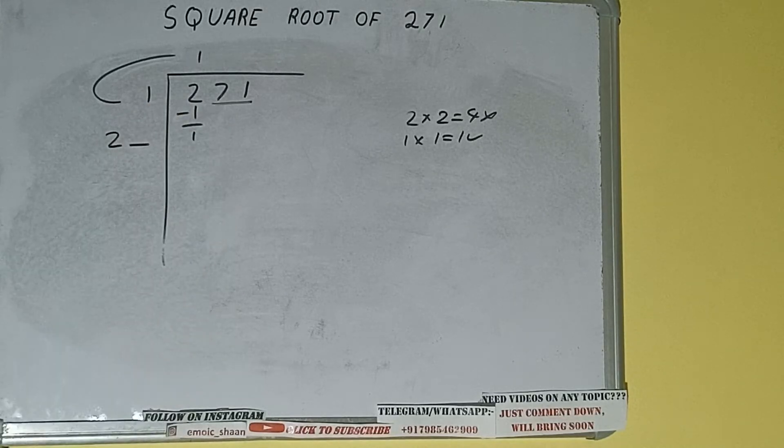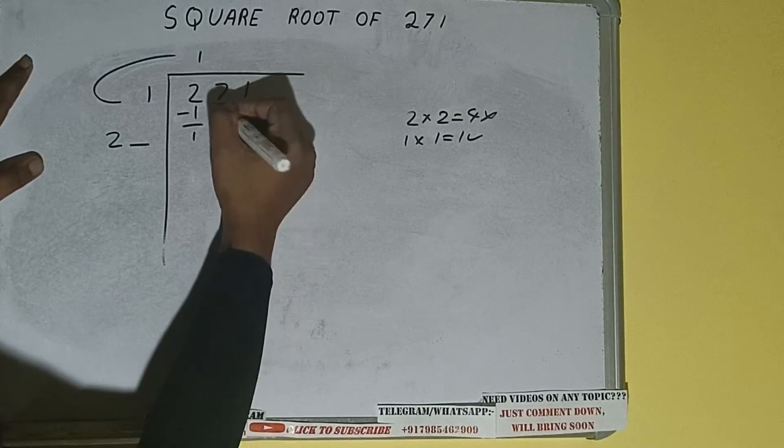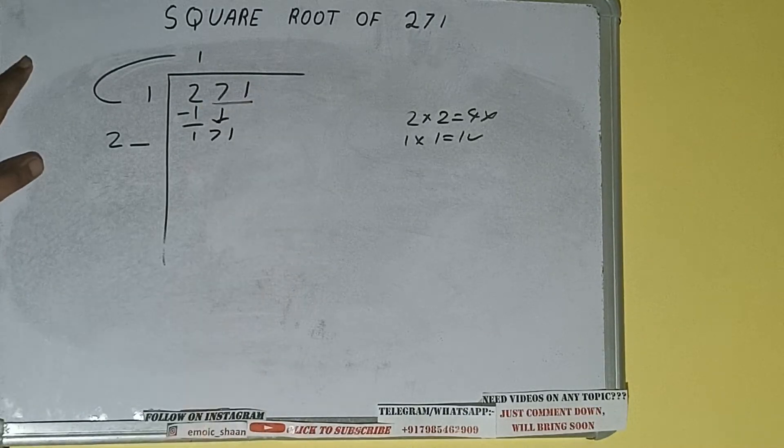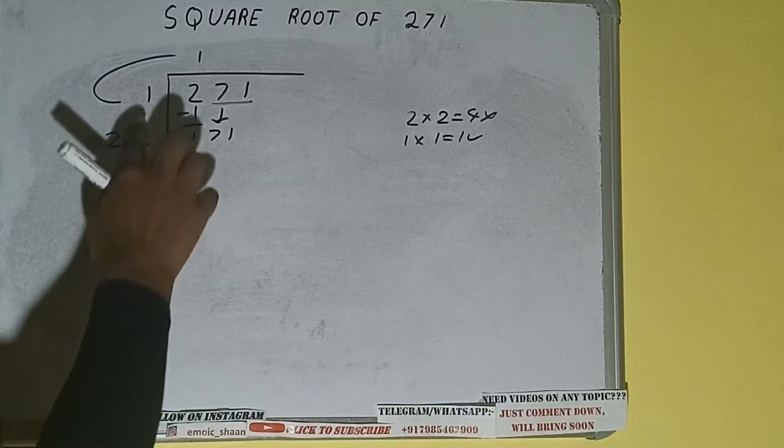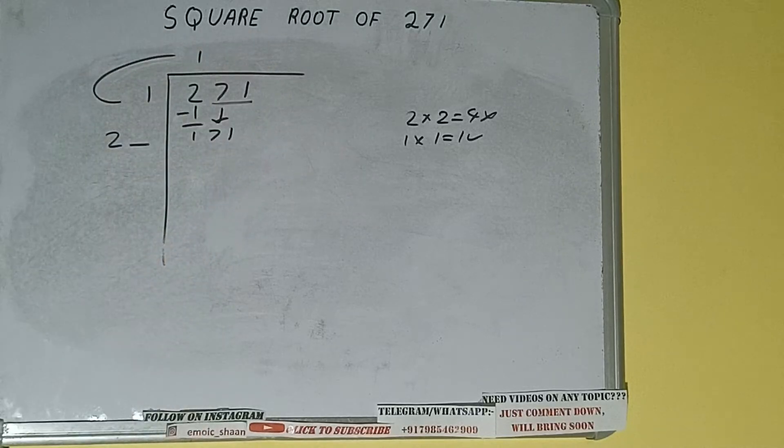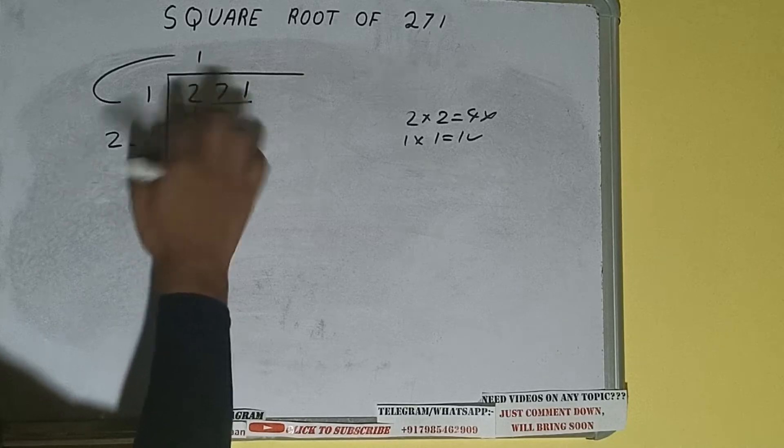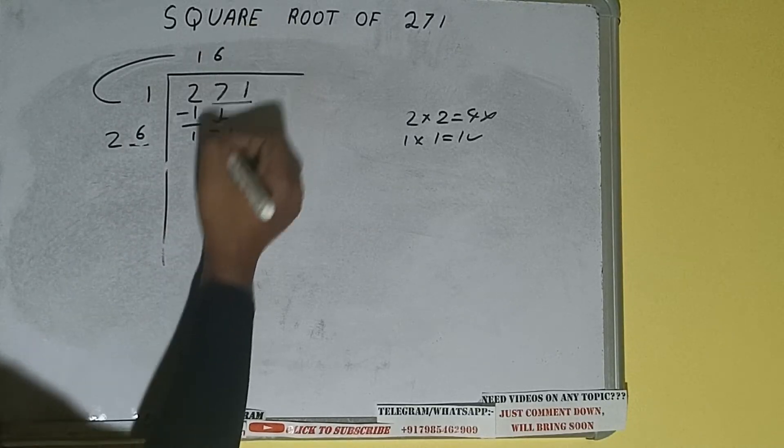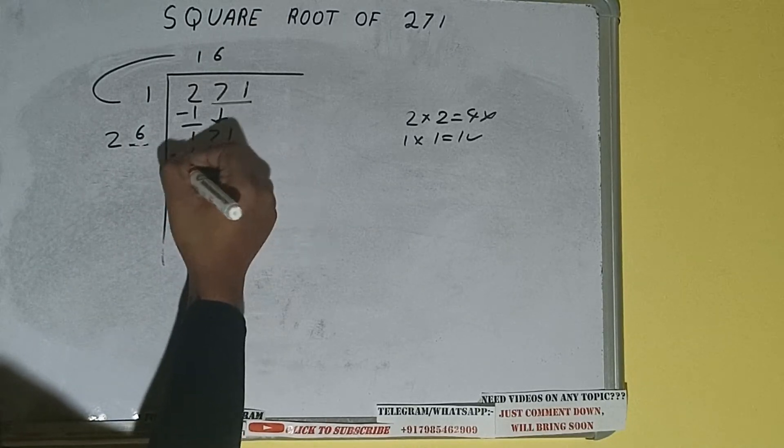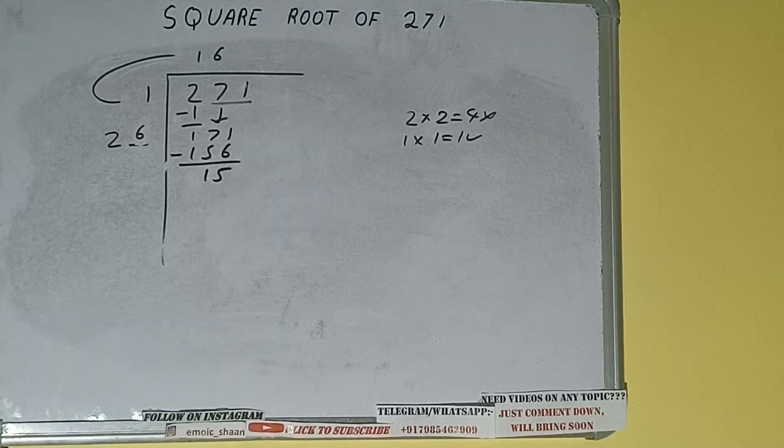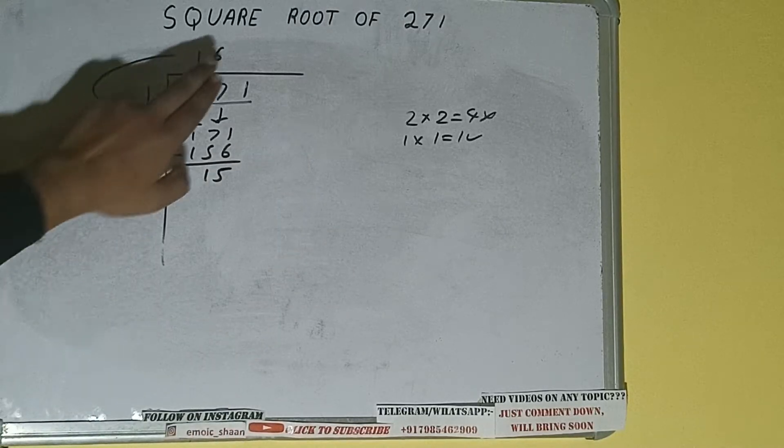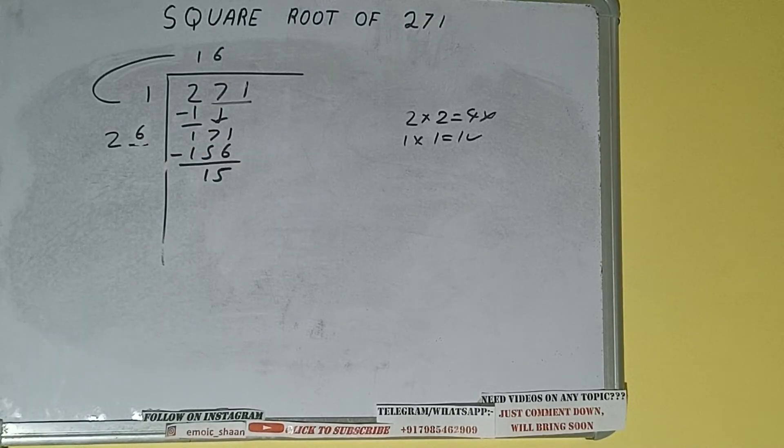Write it here and keep a digit extra, and this number we need to make it big. So bring the next pair down and it will be 171. Now whatever number we write here we have to write here also. So if we write six here and six here, it will be 156 subtract, 15 will be left. Now 26 into 6 we did, so add both. So 26 plus 6 will be 32.